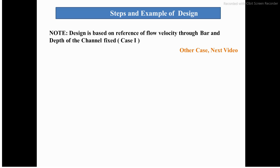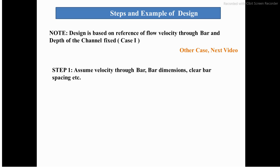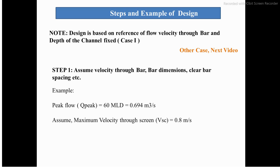The first design case is based on flow velocity through the bar and the depth of the channel. The first step is to assume the velocity through the bar, the bar dimensions, and clear bar spacing. The example considers a peak flow of 60 million liters per day, which equals 0.694 m³/s.